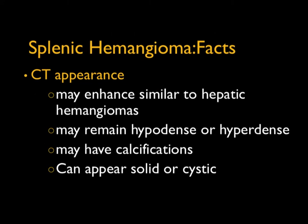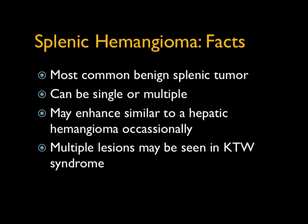Splenic hemangiomas are an interesting lesion. We think about hemangiomas in the liver — about 90% are classic, with peripheral puddling, central filling in, maybe a central scar. Hemangiomas in the spleen can enhance very similar to hepatic hemangiomas, but that's uncommon. Others may remain hypodense, occasionally may have punctate calcifications, and can appear as solid or cystic. The most common benign tumor in the spleen is a hemangioma. They can be single or multiple — multiple is often associated with syndromes like Klippel-Trenaunay-Weber. That classic hepatic hemangioma enhancement pattern is really not typical; it's the ones you like to show in conference, but it is fairly uncommon.